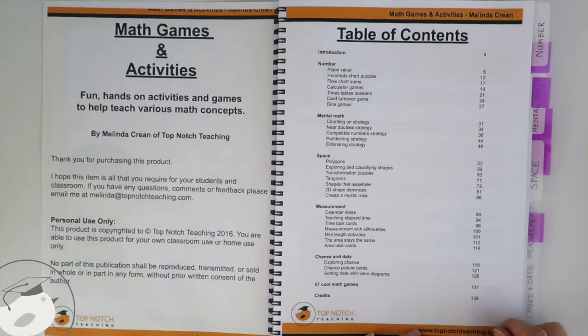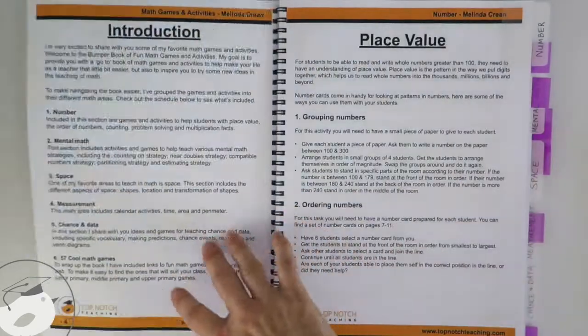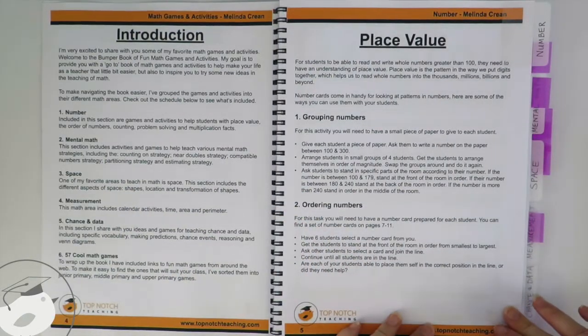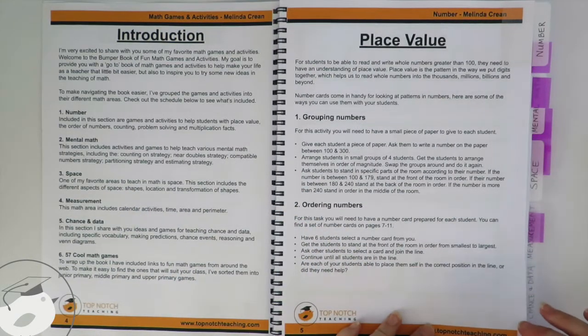So let's have a look at what's included. You'll notice there's the table of contents which lists all the main math areas covered in the book. We've got a section on number with lots of different activities.